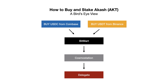Here's a bird's eye view of how we're going to buy and stake Akash. The first step is buying a stable coin. My recommendations are buying USDC from Coinbase or USDT from Binance, or wherever you prefer. Then we're going to move it over to BitMart — one of the quickest exchanges to sign up for and very easy to use. Then we're going to move it over to Cosmo Station and delegate it so you can start earning rewards.